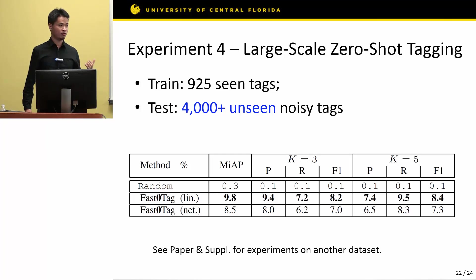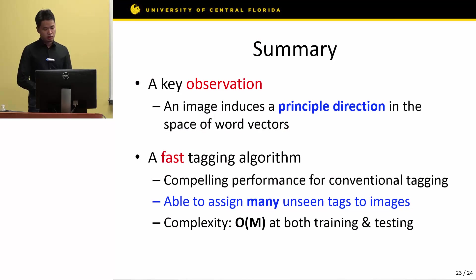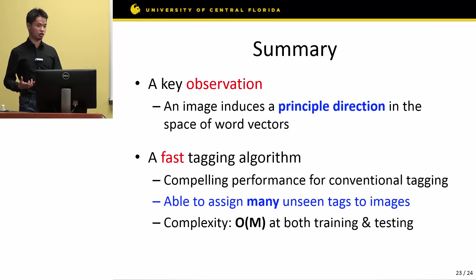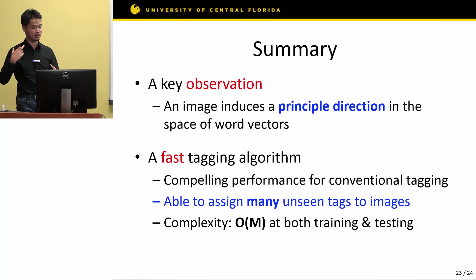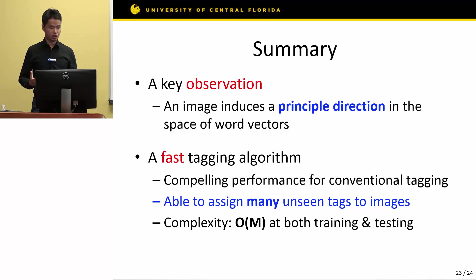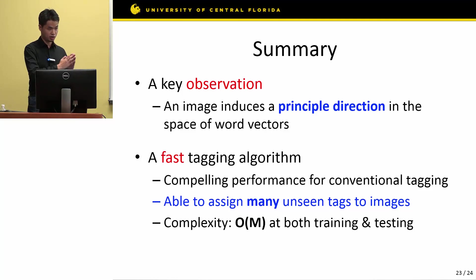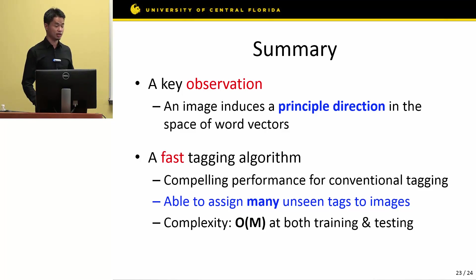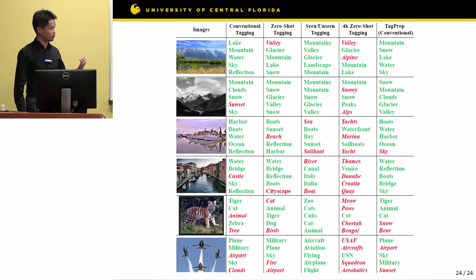We have also performed such experiments on another dataset, which you can refer to in the supplementary material. In summary, this paper makes the observation that each image corresponds to a principal direction in the word vector space which can be used to rank its tags, whether seen or unseen. Based on that observation, we develop a fast tagging algorithm able to assign both seen and unseen tags and achieve state-of-the-art performance with low computational complexity. Here are some qualitative results. I'll take questions. Thank you.